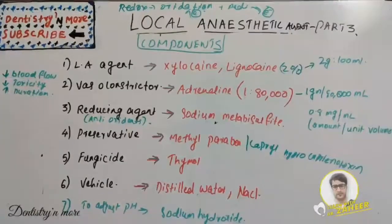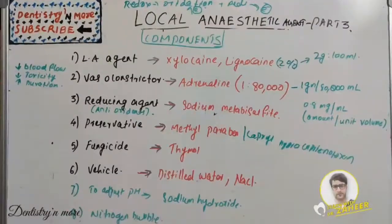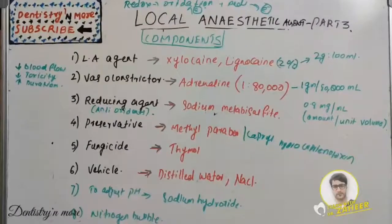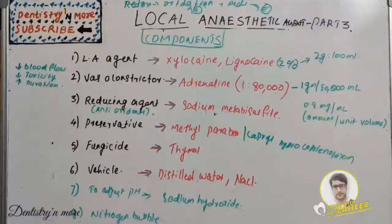There is also sodium hydroxide present to adjust the pH. The last component is nitrogen bubbles within the cartridge — these are present to avoid the entrapment of oxygen. If oxygen is present, it destroys the vasoconstrictor, which is adrenaline or epinephrine. To avoid that, nitrogen bubbles are present in the cartridge.